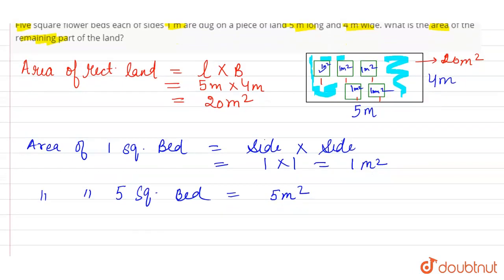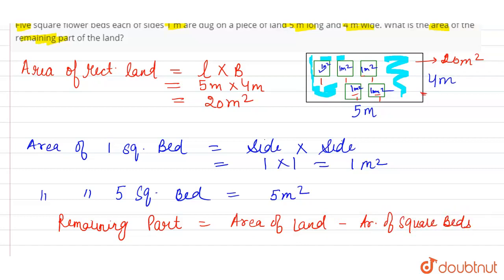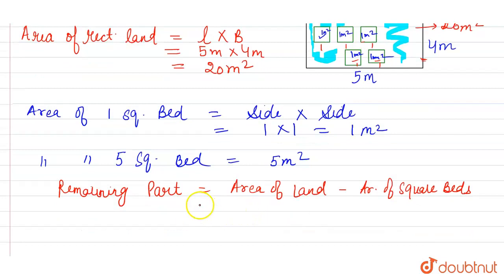We have to find the remaining area — the remaining part of the land. The remaining part is obtained when we subtract these five square beds from the total area of the land. This equals the area of land minus the area of square beds. The area of the land is twenty meter square and the area of five square beds is five meter square, so the total remaining area is fifteen meter square.